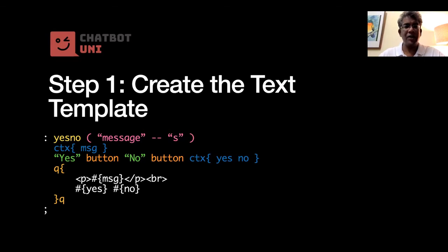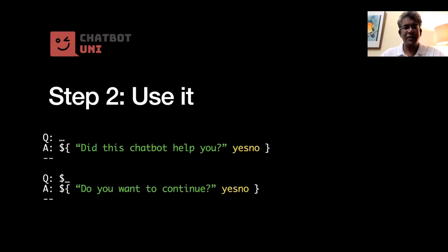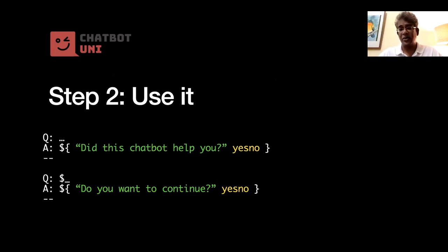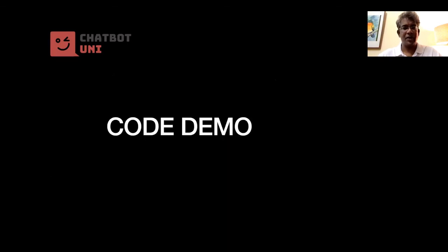To use something like this is very simple — again we use a smart context and feed it some kind of message. For example: 'Did the chatbot help you?' then call yes-no, or 'Do you want to continue?' with the IDK situation and call yes-no as well.